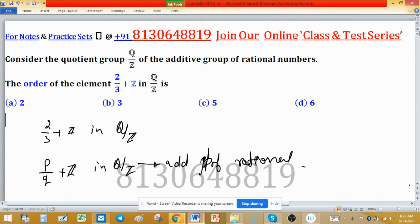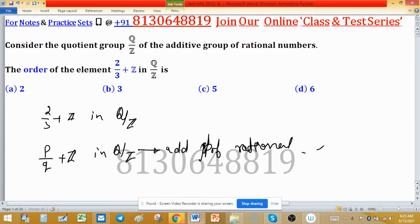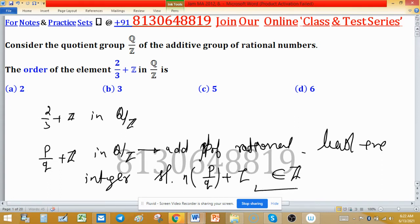So the order of this element will be the least positive integer such that n times p/q + Z, meaning n into p/q + Z, belongs to Z or is an integer.